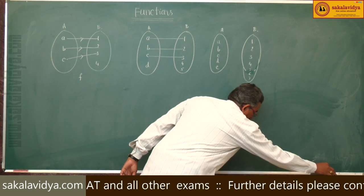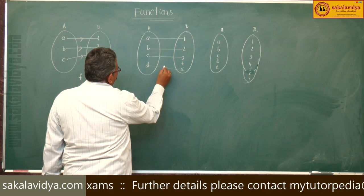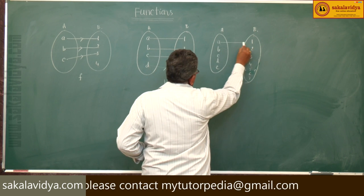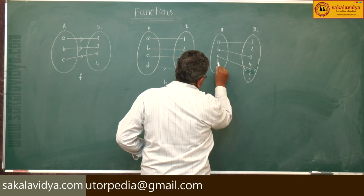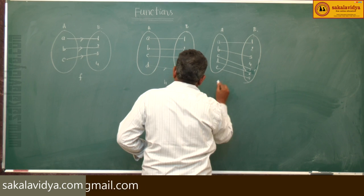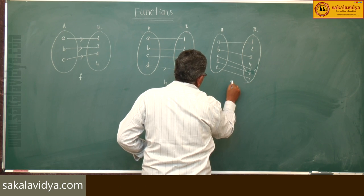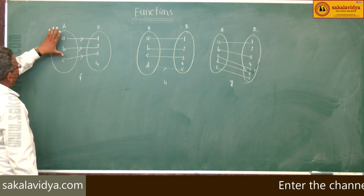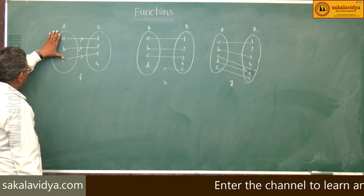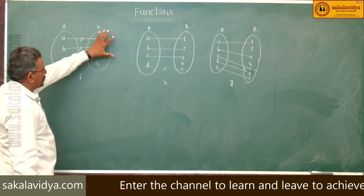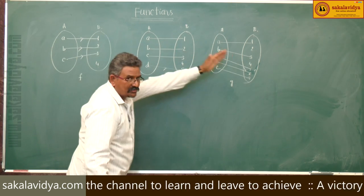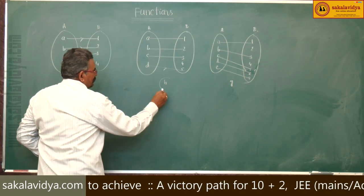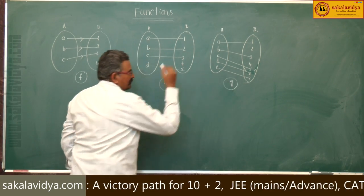Next, this is a function. A maps 1, b maps 2, c maps 3. Next, d maps 5. Say h function: a maps 1, b maps 3. Now, here we observe that different elements of A have different images in B. Similarly in h and g also. So f is a one-to-one function, h is a one-to-one function, g is a one-to-one function.